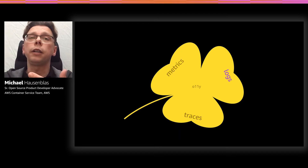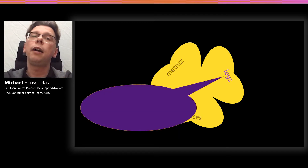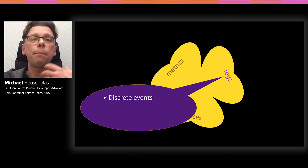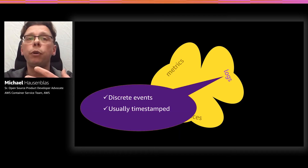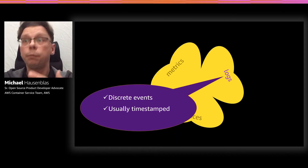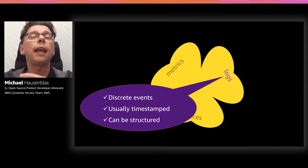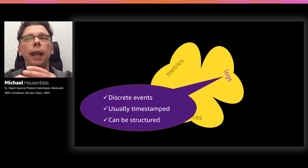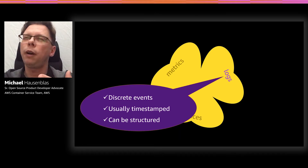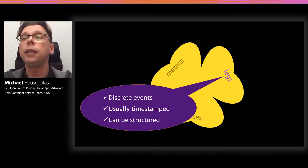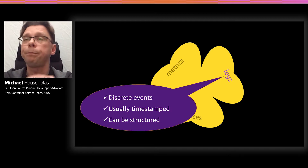First, logs. Logs are discrete events that happen somewhere in your program. They're usually timestamped — not a hard requirement, but good to have — and can be structured, which is a really good thing to have, especially for automation purposes.